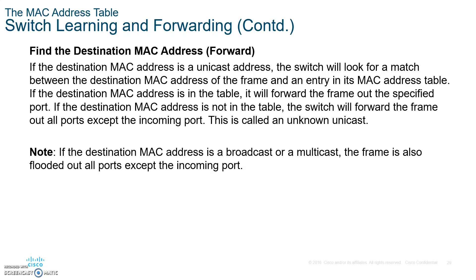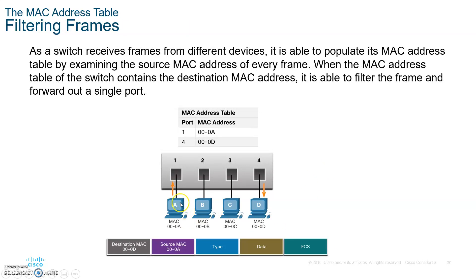Here are two questions you should know. Question one: how does the switch learn where MAC addresses are located? Answer: by inspecting the source MAC address stamped on the incoming frame and knowing which port it came from. Question two: what does the switch do when the destination MAC address is not in the MAC address table? Answer: it floods the frame — sends it to all ports.